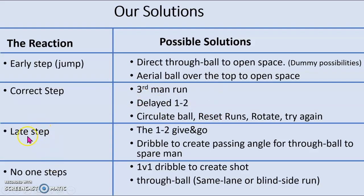What are the other incorrect reactions? Late step. So they let us turn, they let us engage the back line on the dribble, and then someone steps off the back line. This is right for the one-two, give and go, or just creating a passing angle using the dribble and finding a free player. Way easier to do than creating space for your shot, because all you have to do is poke a little five-to-seven yard through ball in — that's easier than ripping a 20-yard shot.